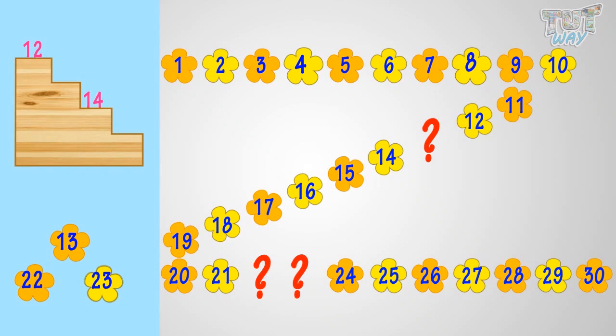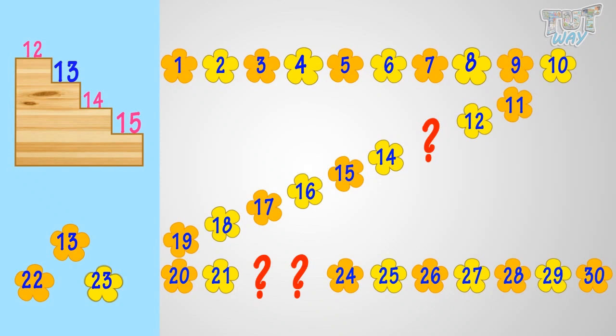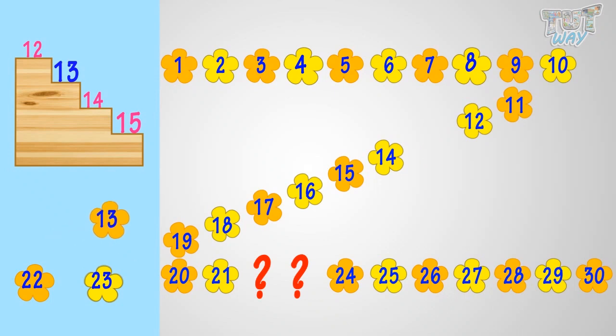For a number that comes after 12, count forward: 12, 13, 14, 15. 13 comes after 12. And for a number that comes before 14, count backward: 14, 13, 12. Yeah! 13 comes before 14. So we will place the flower with number 13 at this place.